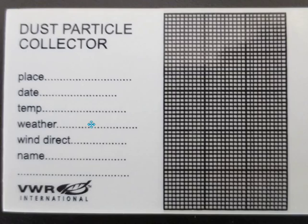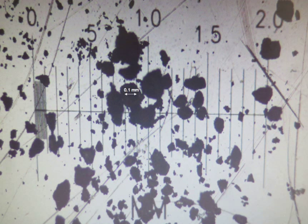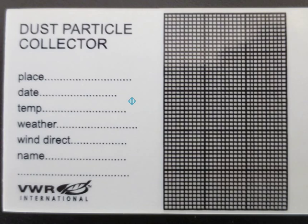The dust collector is then viewed under a microscope. The times 10 objective will show only about four squares in its field of view. This grid, when used in conjunction with a stage micrometer, can give an idea of particle size. These soil particles are quite large, while others are less than one hundredth of a millimeter, or less than 10 micrometers.